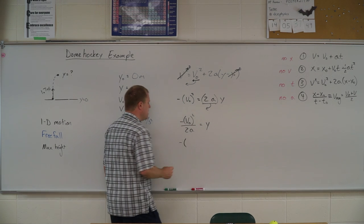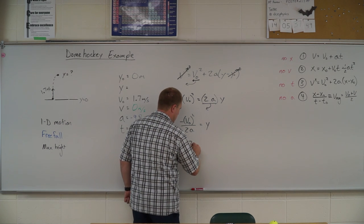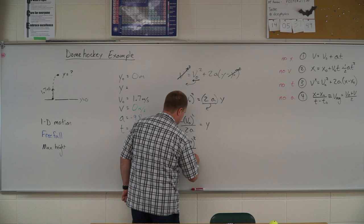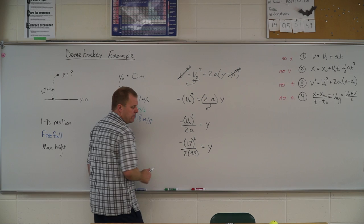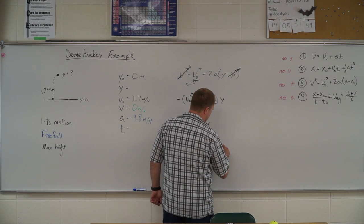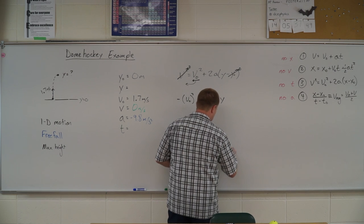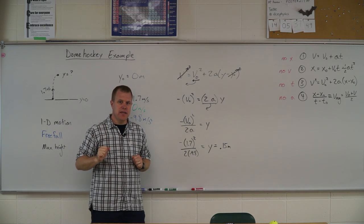Plug in my numbers. So I have negative 1.7 squared divided by 2 times negative 9.8. Good. Those negatives are going to cancel each other out. And we're going to get a total height of 0.15 meters or about 15 centimeters. So it bounces about that high off. That seems reasonable to me.